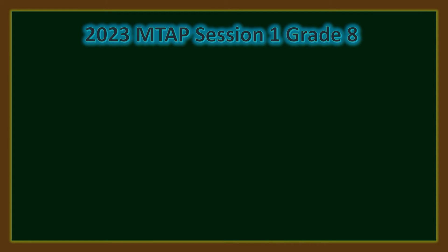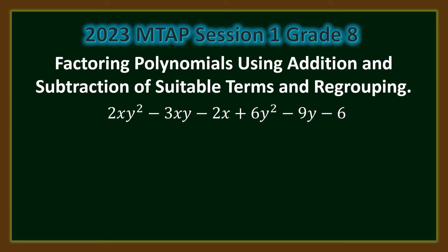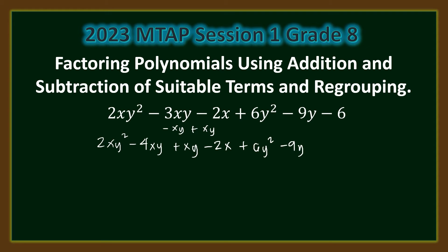Let us solve this problem. Factor completely 2xy² minus 3xy minus 2x plus 6y² minus 9y minus 6. We begin by adding and subtracting xy to this polynomial, giving us 2xy² minus 3xy minus xy plus xy minus 2x plus 6y² minus 9y minus 6.